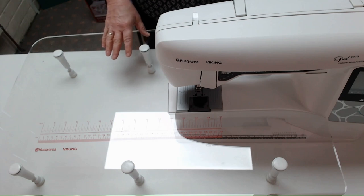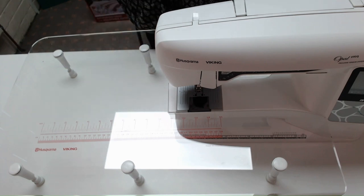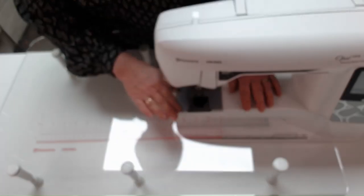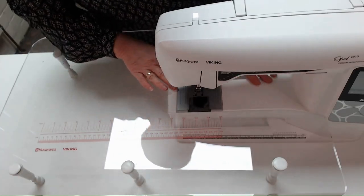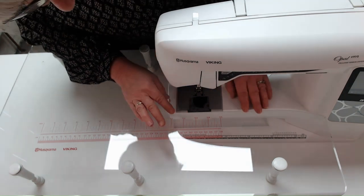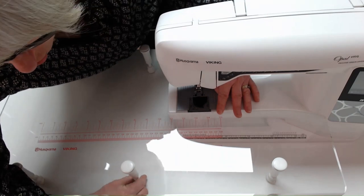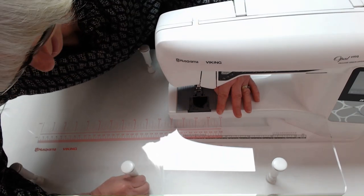Now this extension table doesn't clip onto the machine like the white one does because it's got legs on it, so we need to adjust these legs. If you look at your machine and feel around here, you can feel if it's level with the table. I can feel that it's slightly higher at this end, so you need to adjust your legs. The legs screw in and out, up and down.